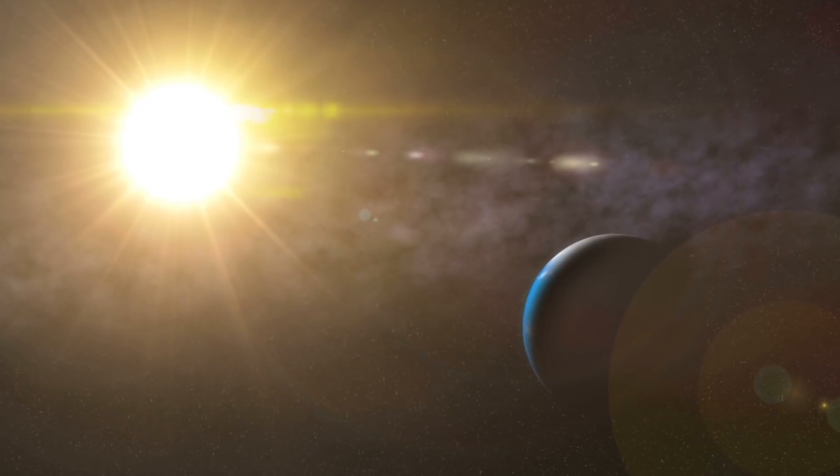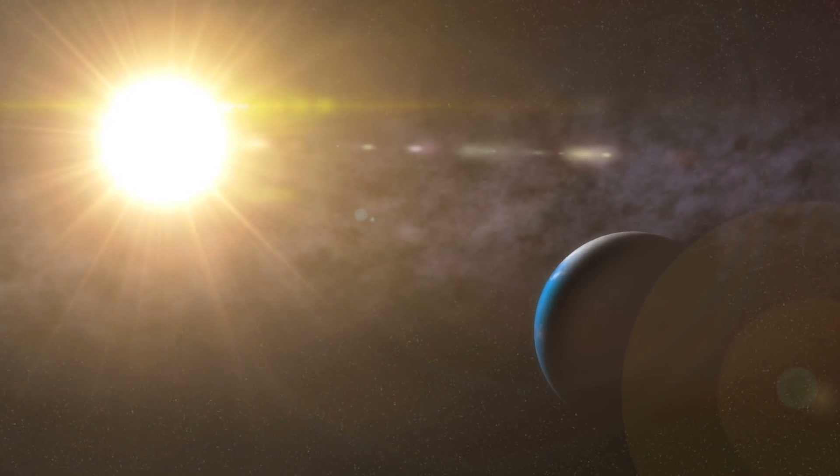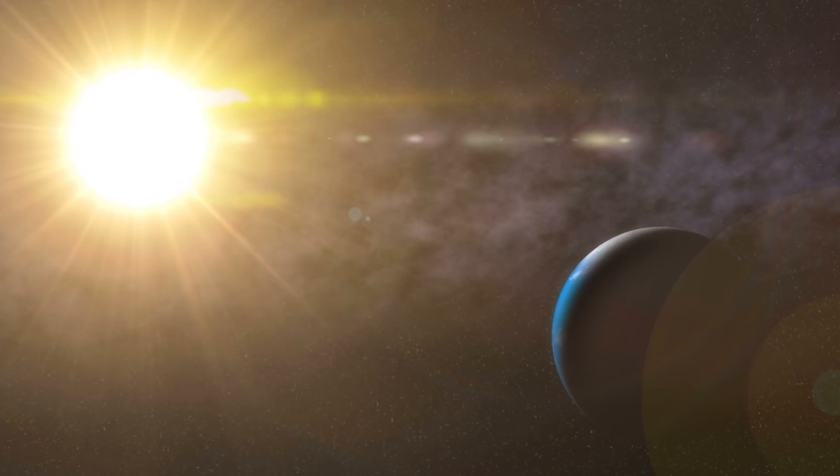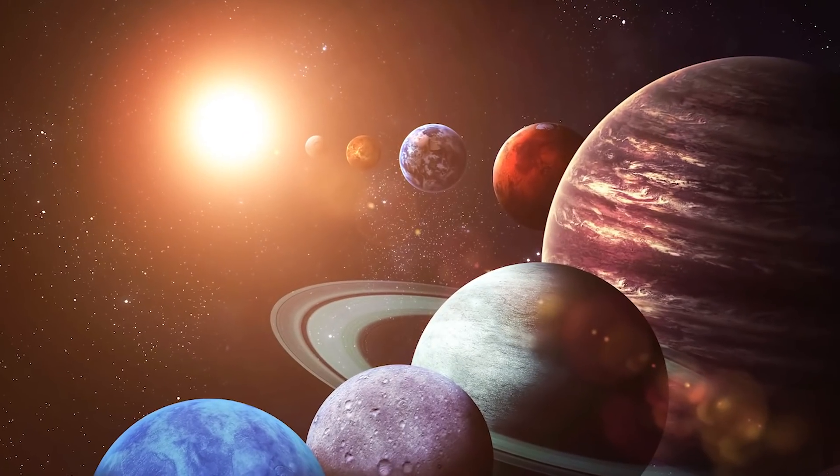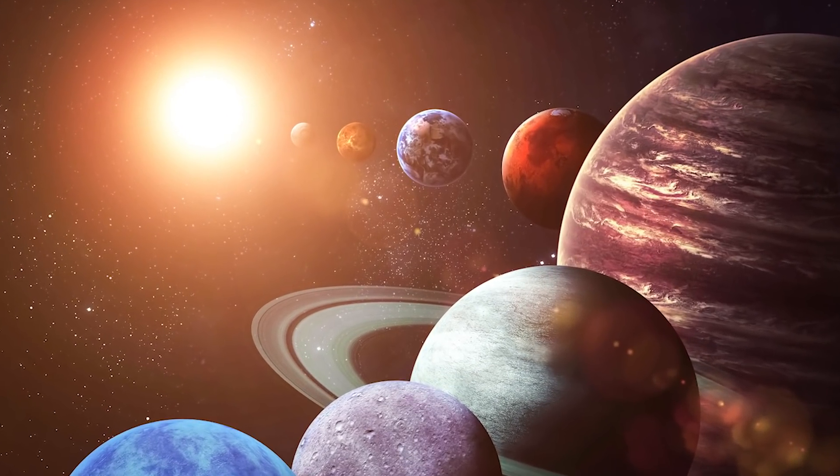As time goes by, the continuous spin from individual clumps inside this disk coalesce to form everything that we see in the solar system. The planets, the comets, dwarf planets, and even the sun.